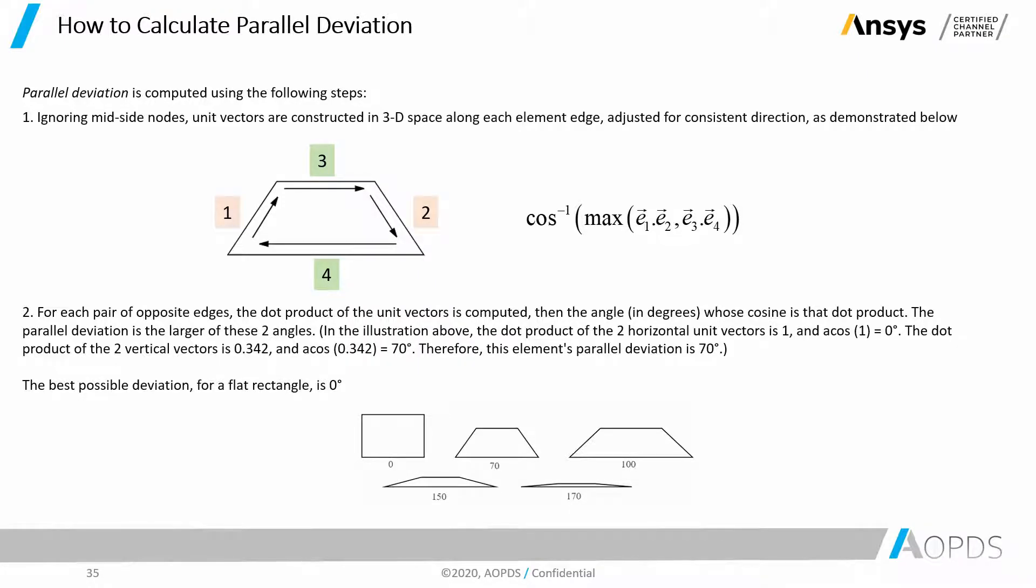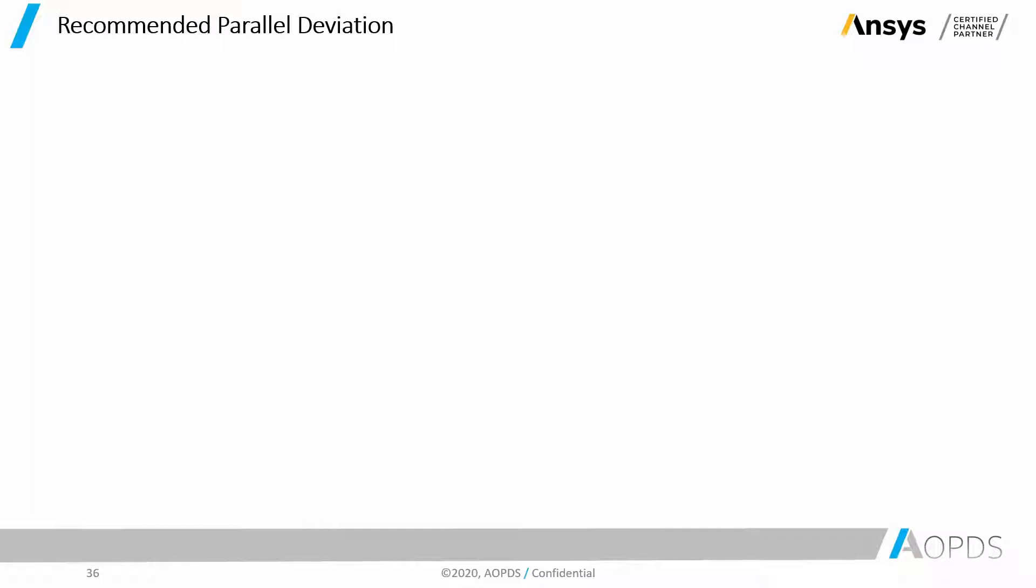Now, what is the recommended parallel deviation? Based on your simulation, whether it is a CFD analysis or an FEA analysis, the parallel deviation that ANSYS or different software recommend is different. As a rule of thumb, we suggest keeping parallel deviation less than 100 degrees. Of course, we have to make sure to avoid having more than 100 degrees in areas of interest.